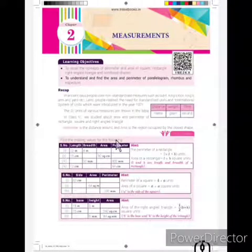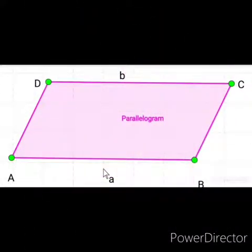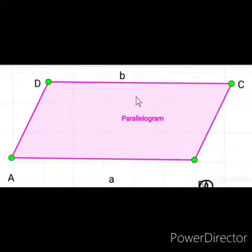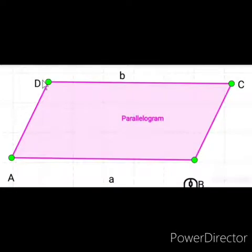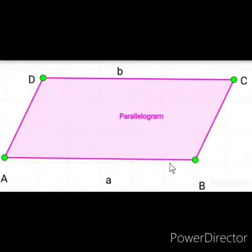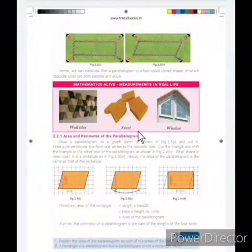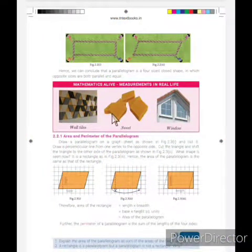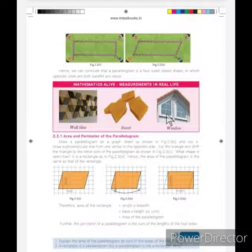First, we are going to see about the parallelogram. We all know that a parallelogram is a four-sided closed shape. Parallelogram opposite sides are parallel, and AB is parallel to CD and BC is parallel to DA. In our daily life, we see the shape of parallelogram — for example, wall tiles and windows are under the shape of a parallelogram.